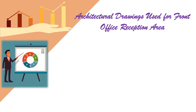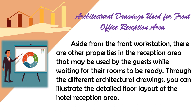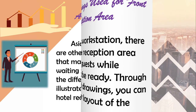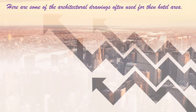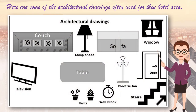Architectural drawings are also used for the front office reception area. Aside from the front workstation, there are other properties in the reception area that may be used by guests while waiting for their rooms to be ready. Through different architectural drawings, you can illustrate the detailed floor layout of the hotel reception area. Some common architectural drawing symbols include the couch, lampshade, sofa, window, door, stairs, electric fan, wall clock, plants, table, and televisions.